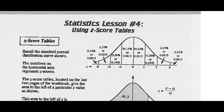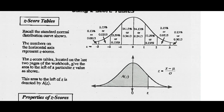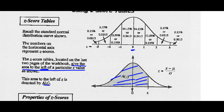Math 20-2. We're going to look at using Z-score tables. Recall the standard normal distribution curve: numbers on the horizontal axis represent Z-scores, 0 is the mean, positive Z-scores are above the mean, negative Z-scores are below the mean. The Z-score tables located at the back of the workbook give the area to the left of a particular Z-value. Always, always left of the Z-score.